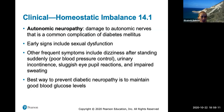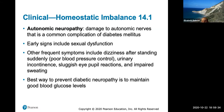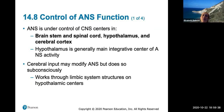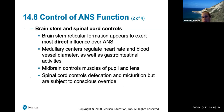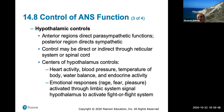For clinical applications: autonomic neuropathy is damage to autonomic nerves and is a common complication of diabetes mellitus. Symptoms include sexual dysfunction, dizziness after standing, and urinary incontinence. The best prevention is maintaining good blood glucose control. The ANS is under the control of the central nervous system, and the hypothalamus controls heart activity, blood pressure, temperature, and emotional responses.